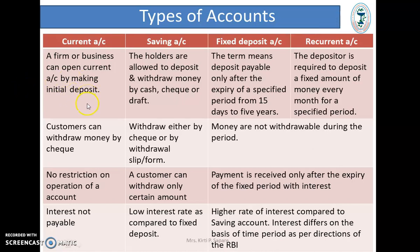In a Current Account, a person can withdraw money by check. In a Saving Account, a person can withdraw money by slip, withdrawal form, or check. In Fixed Deposit and Recurrent Deposit accounts, money cannot be withdrawn during the period — you can only withdraw once the period is over. In a Current Account there is no restriction on operation; in a Saving Account customers can withdraw only a certain amount, while Fixed Deposit and Recurrent Deposit accounts receive payment only after expiry of the fixed period with interest.